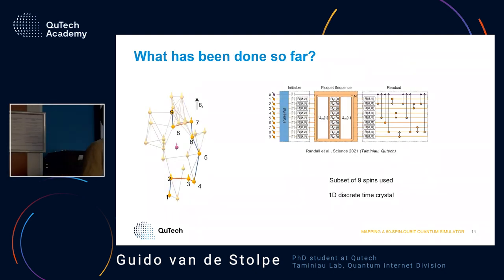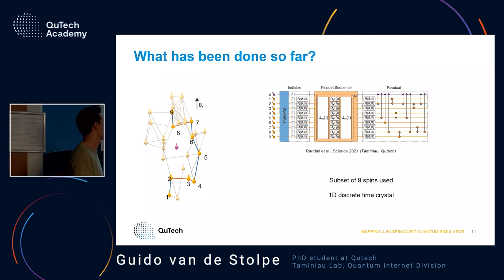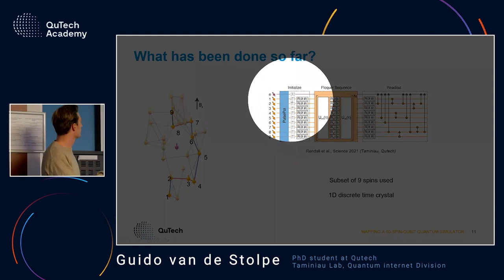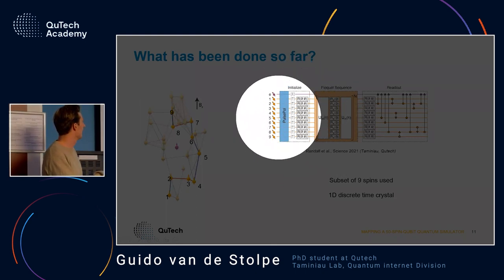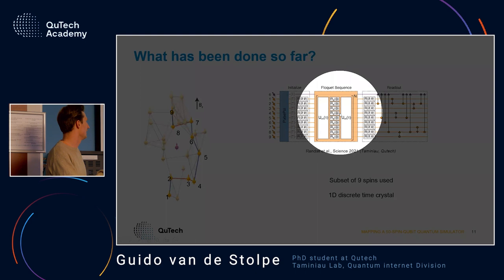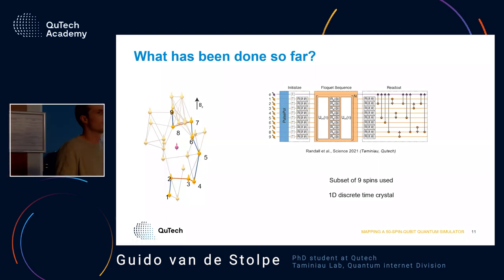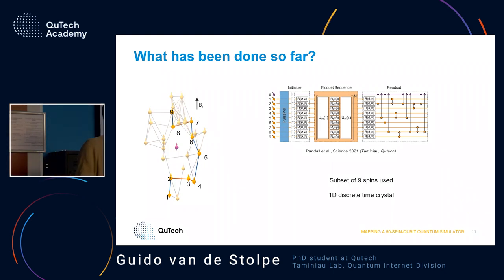What has been done before with this system? We already made a discrete time crystal in our group — my collaborators picked nine of these nuclear spins and did a quantum simulation. The simulation involves three steps: initializing the spins, applying RF pulses to induce interesting dynamics, and then reading out all spins. For these nine spins that works quite well, but of course nine spins can still be simulated on a classical computer, so you want to go to more complex systems — namely 50 spins.